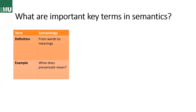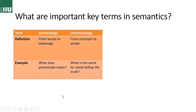First we have semasiology, where we go from the word to the meaning. My example question here is: what does 'prevaricate' mean? — a word that most of you probably haven't heard yet, it's really rare. The counter concept is onomasiology, where we go from the concept to a word, and here the question is: what is the word for 'avoid telling the truth'? — it's prevaricate.